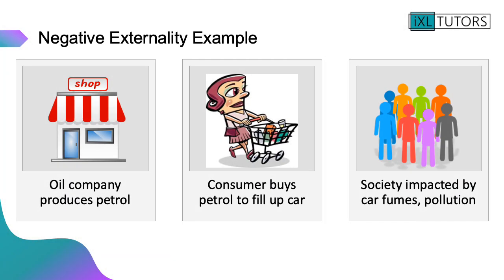A further example: an oil company produces petrol, a consumer buys petrol to fill up their car. However, there are negative externalities impacting society — car fumes and pollution are created. So the consumer and the business are imposing these negative externalities on the rest of society.